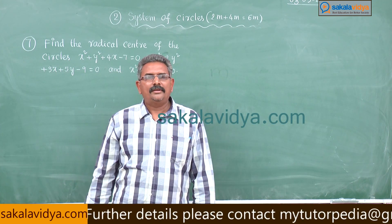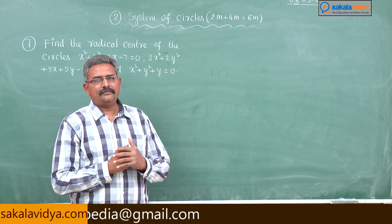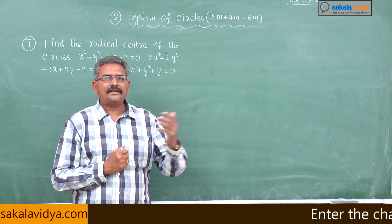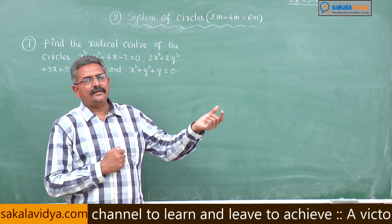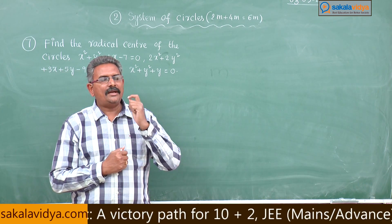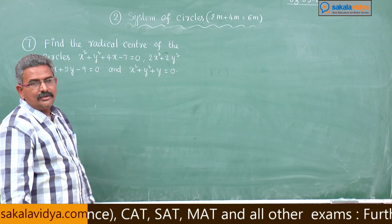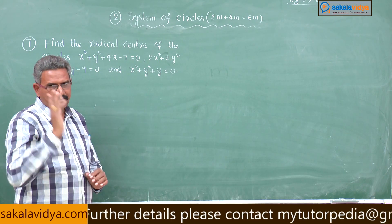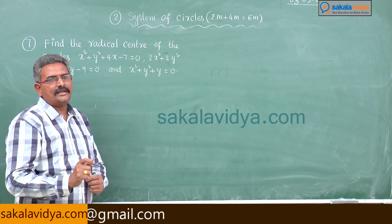So, my dear children, first of all let us analyze the problem. If you analyze the problem, similar types of problems you can solve from your textbook, previous year test papers, or any reference book. Even in examinations, if a different question is given based on this concept, you can easily do the problem. Since here 3 circles are given, in order to find the Radical Centre, first we have to find out 2 equations of Radical Axes. If you solve the 2 Radical Axes, we get the ordered pair (x, y), which is known as the Radical Centre.